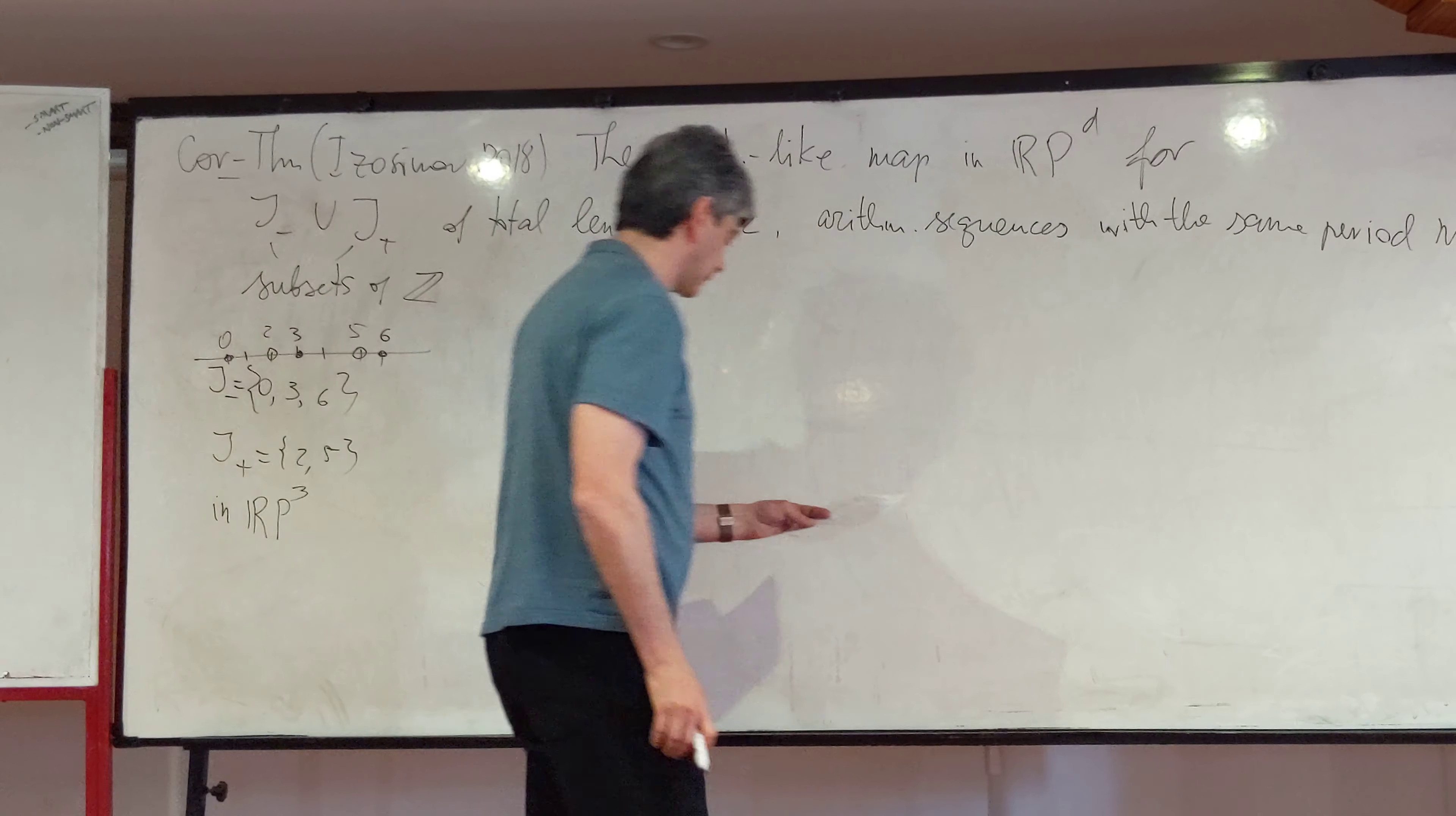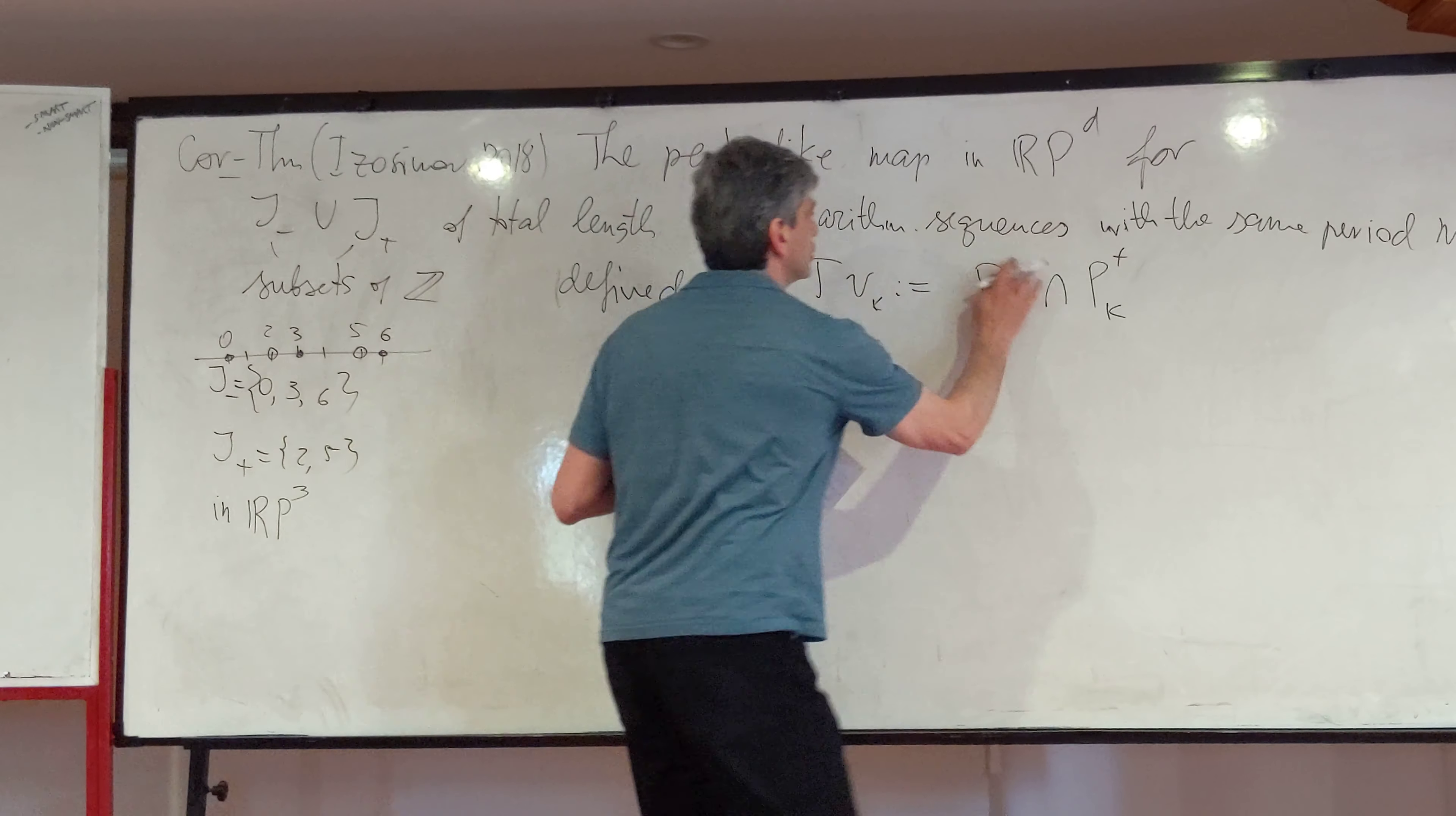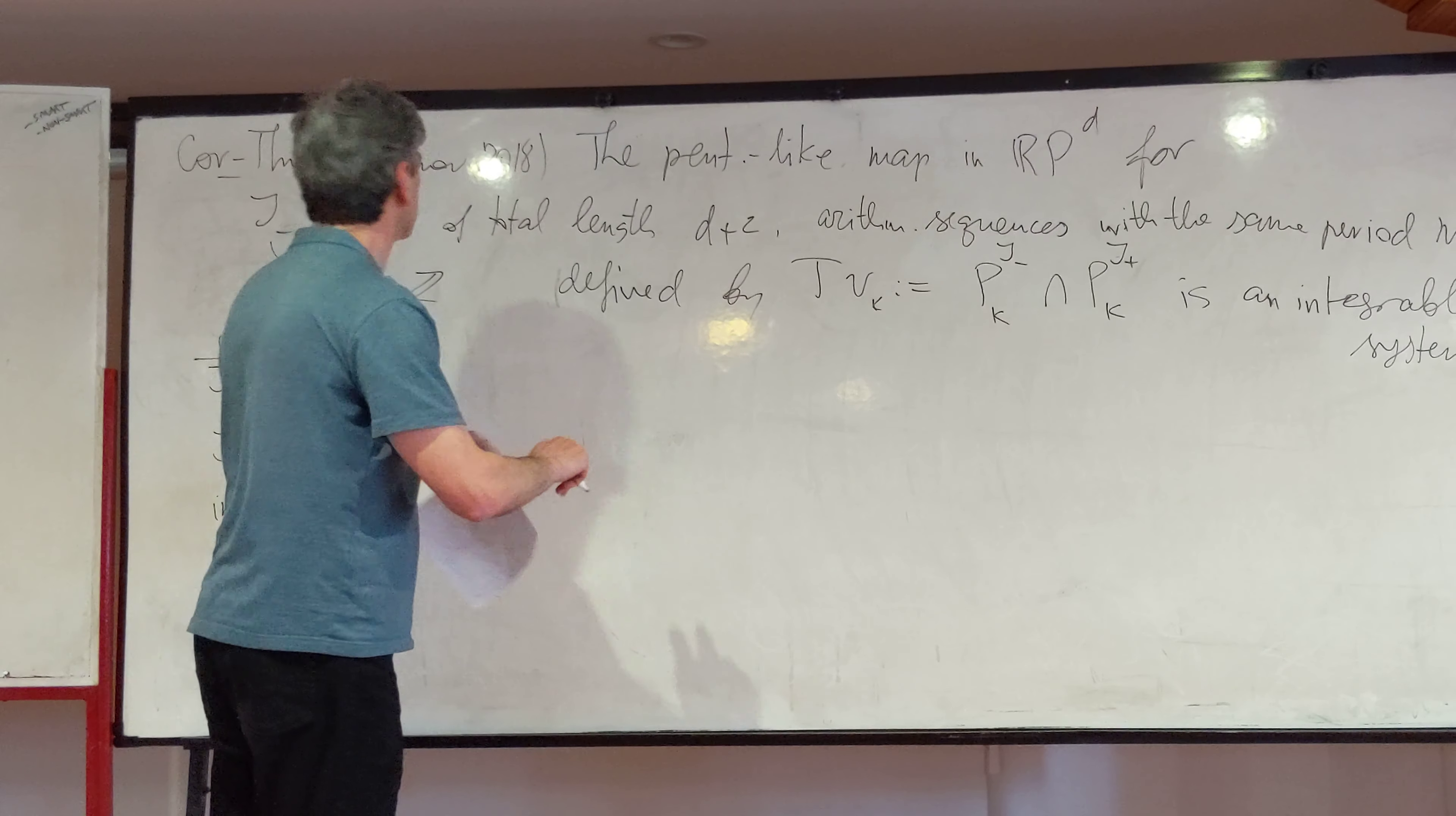So the claim is that the corresponding, defined by the intersection of pk corresponding to J-minus with pk corresponding to J-plus, is an integrable map. And actually that's exactly the example, almost the example we discussed before.